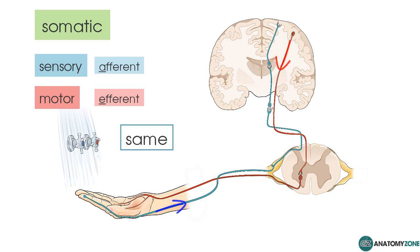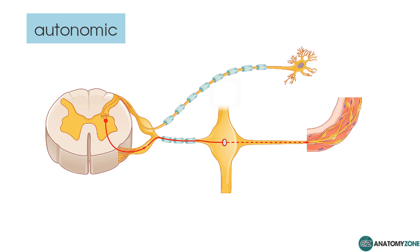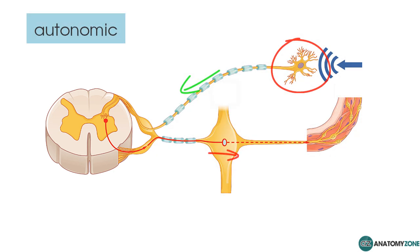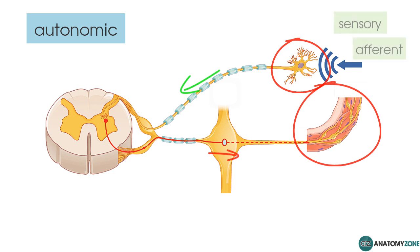To remember which direction afferent and efferent travel relative to the CNS, use the mnemonic: afferent arrives, efferent exits. The autonomic nervous system also has afferent and efferent components. For example, a sensory nerve ending detects stretch in the aortic or carotid sinuses — stretch in the smooth muscle wall of a blood vessel. This feeds back into the CNS, which then provides an efferent motor response to relax the smooth muscle wall — a visceral afferent feeding into a visceral efferent.